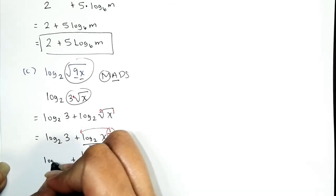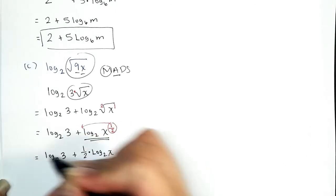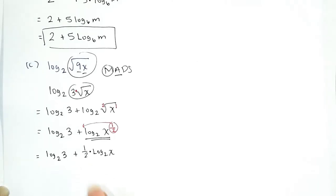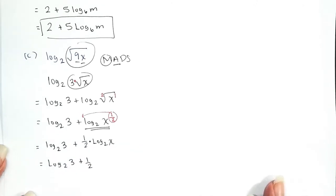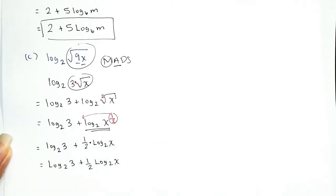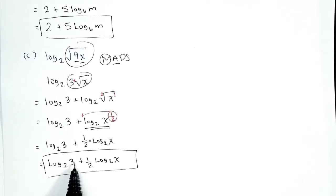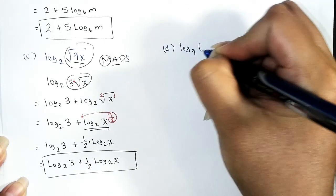Our final answer for Problem C is log base 2 of 3 plus one-half times log base 2 of x. We can't expand it further — the first argument is a single number with no product, quotient, or exponent, and the same is true for the second argument.